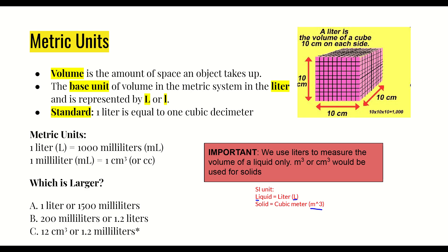Looking at more metric units: one liter is equal to 1,000 milliliters, and one milliliter is equal to one cubic centimeter. That second conversion is really important to know, because it allows us to easily convert between units for liquids, like milliliters, and solids. So if we measure something to have a volume of 50 milliliters but it's actually a solid, we'd write 50 centimeters cubed instead — recognizing that a milliliter is the same as a cubic centimeter.